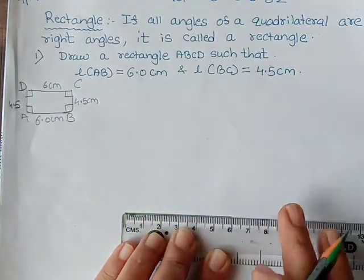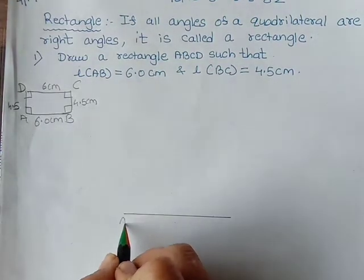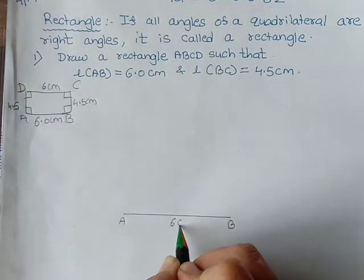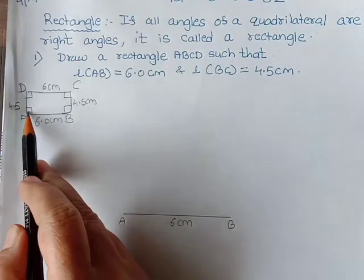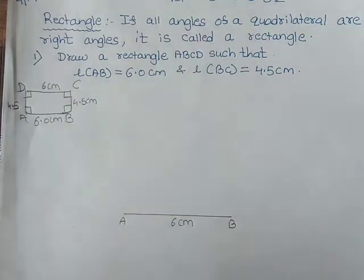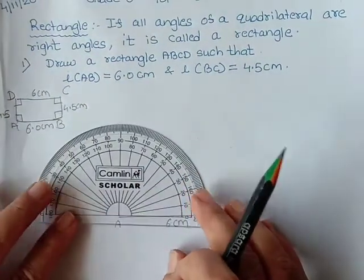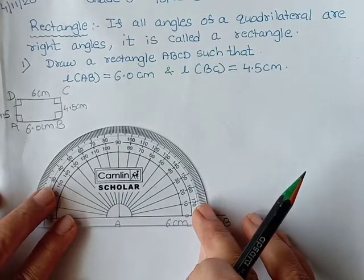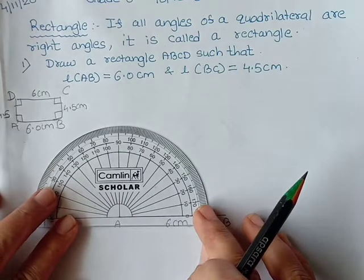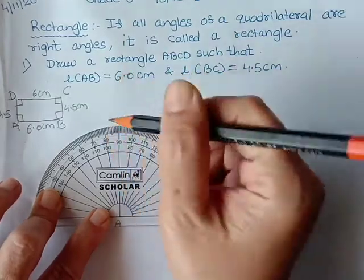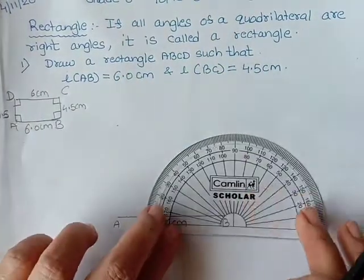This is A and this point is B. This is how much? 6 centimeter. What is angle A? 90. B also 90. So take a protractor and draw 90 degree angle at both the sides, at both the points we can say, A as well as B. So this is 90 degree.